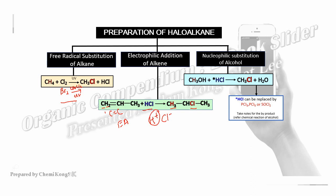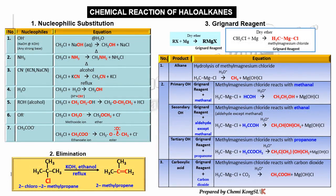The third preparation is nucleophilic substitution of alcohol. The OH of alcohol is substituted by HCl to form haloalkane, with water as a side product. HCl can be replaced by PCl3, PCl5, or thionyl chloride (SOCl2). You can learn this in more detail when studying Chapter 8 on alcohols.